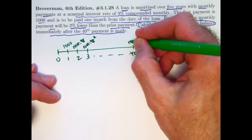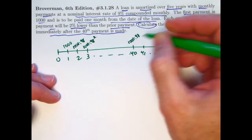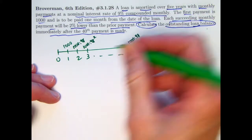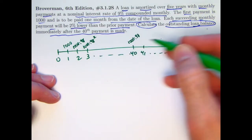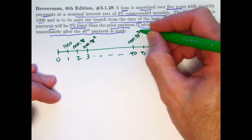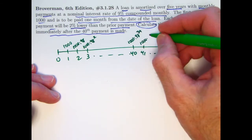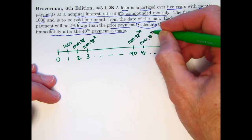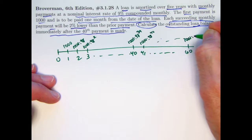At time 40, the payment is going to be $1,000 times 0.98 to a power that is one less than the month, because you can see the pattern here. For example, it's a square there when it's time 3. This is going to be the 39th power. At time 41, it'll be $1,000 times 0.98 to the 40th power. The last payment will be $1,000 times 0.98 to the 59th power.